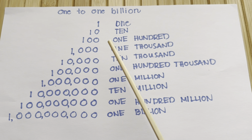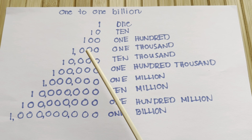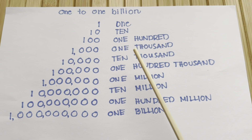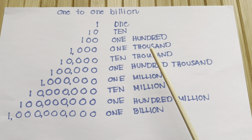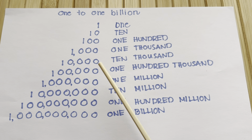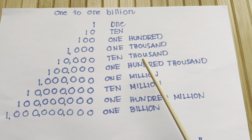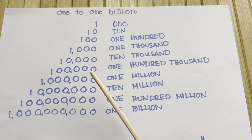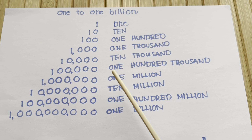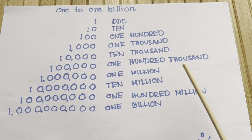One hundred, one hundred. One thousand, one thousand. Ten thousand, ten thousand. One hundred thousand, one hundred thousand.